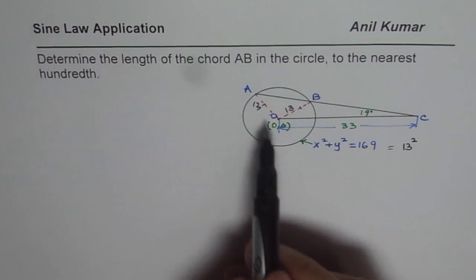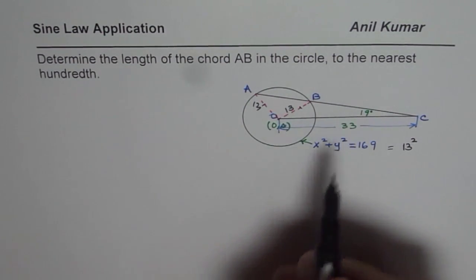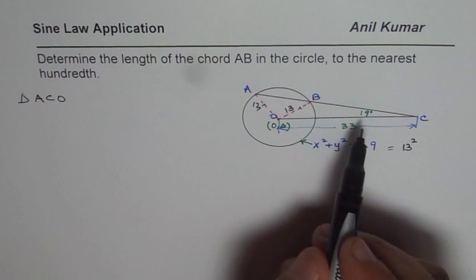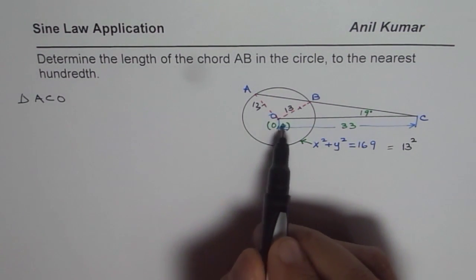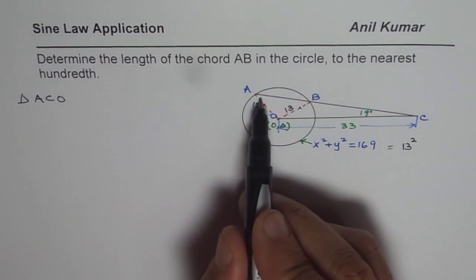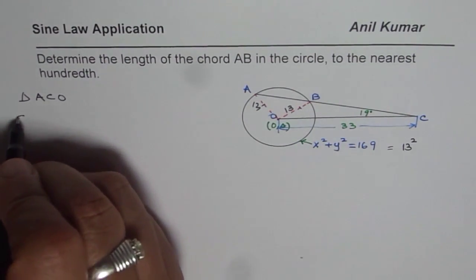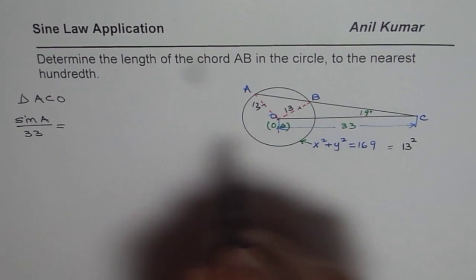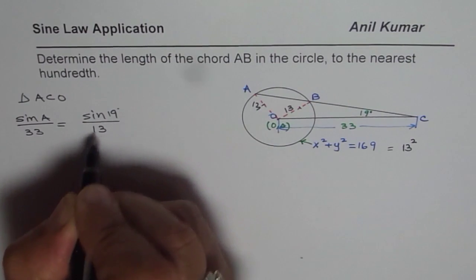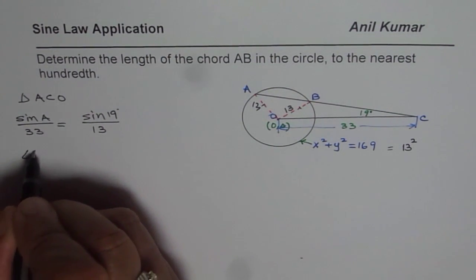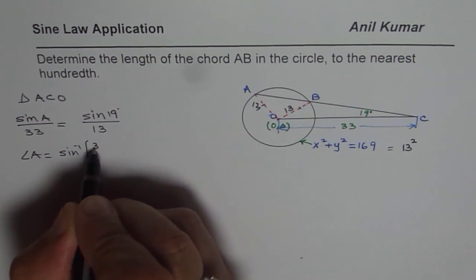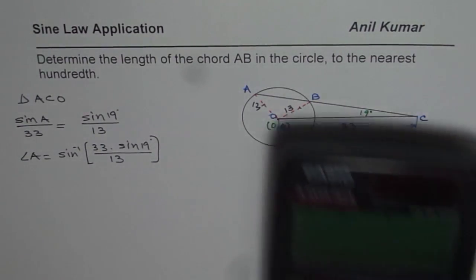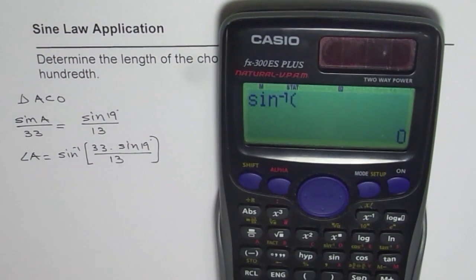Triangle AOB is an isosceles triangle with 13 as its dimensions. Now if we solve for triangle ACO, then what we notice here is that we know one angle and the side opposite which is 13, plus we know one side which is OC. And so we can find the angle A applying sine law. So we can say sine of A over the side opposite which is 33 is equal to sine of 19 degrees divided by 13. So from here we can find what angle A is. Angle A is sine inverse of 33 times sine of 19 degrees divided by 13.